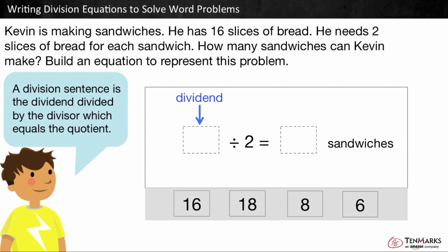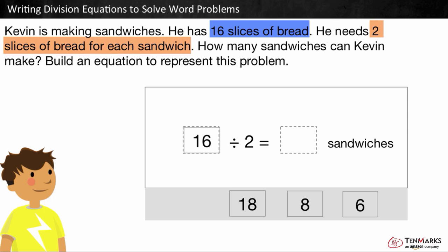The dividend is the total. The total here is the 16 slices of bread. So we can drag 16 here, since it's the dividend. Kevin needs 2 slices of bread for each sandwich. So if each sandwich is a group, the number in each group is 2. We can call this the divisor. 16 divided by 2 is equal to some number.